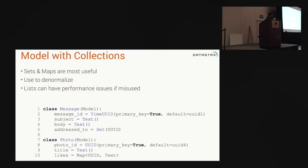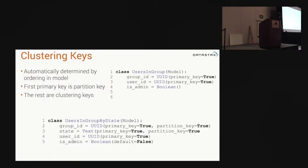Models with collections are very useful and really easy to design. Here we have messages with a set of UUIDs — maybe that's a list of user IDs. Or we have a photo with a 'likes' field at the bottom which is a map of UUID to text — maybe that's my user ID and my name showing who likes this. Very easy to get all that data in a single query. We have clustering keys that determine the ordering of data within a partition. In this example we have users in a group. If you define multiple fields as your primary key, the first will become the partition key and the subsequent items will become clustering keys in the order they're specified in the model.